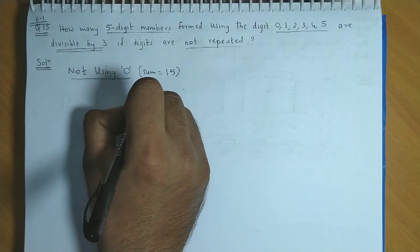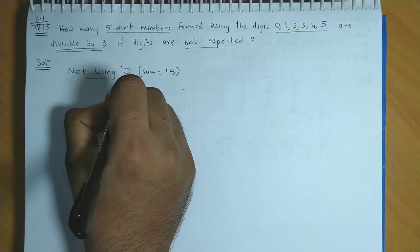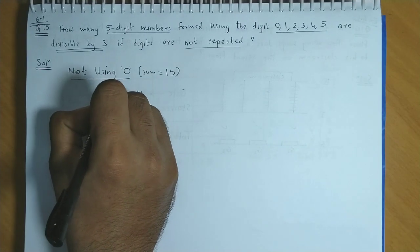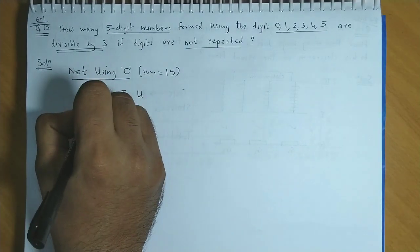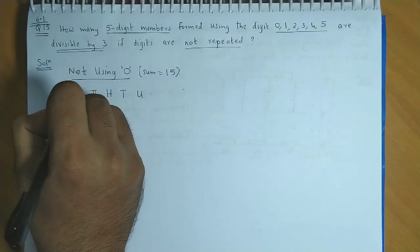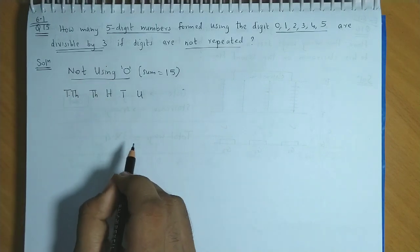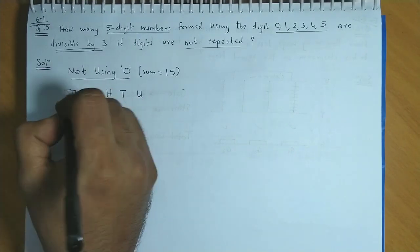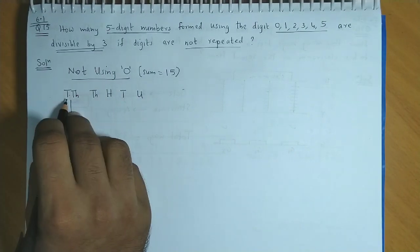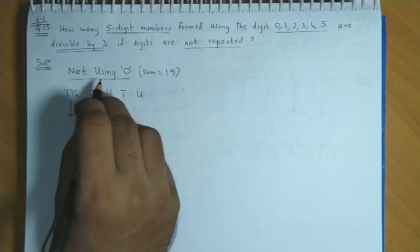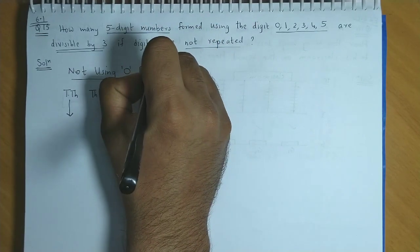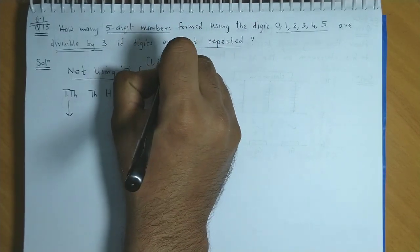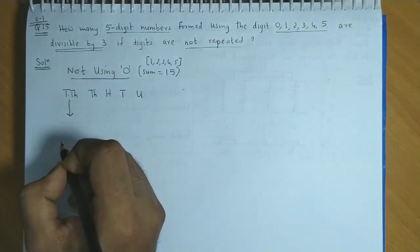For a 5 digit number we have the units place, the tens place, the hundreds place, the thousands place, and the ten thousands place. Since we are not using 0, we could begin with the ten thousands place. Basically we are using 1, 2, 3, 4, and 5. We are not using 0.